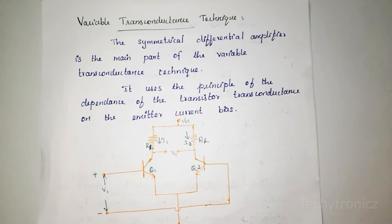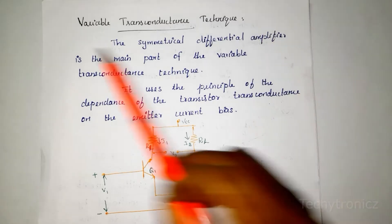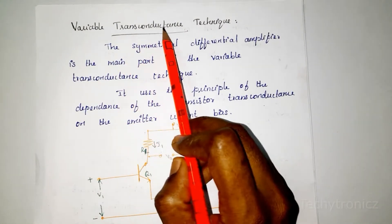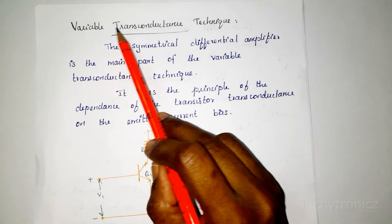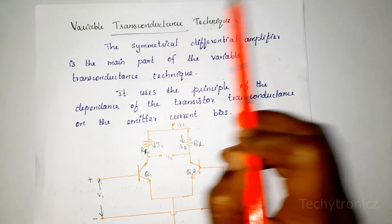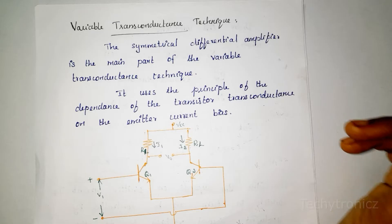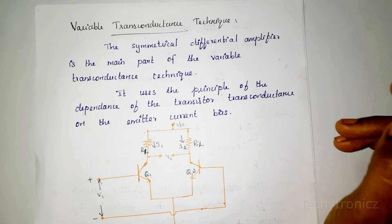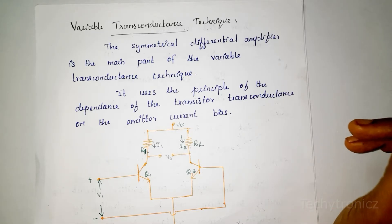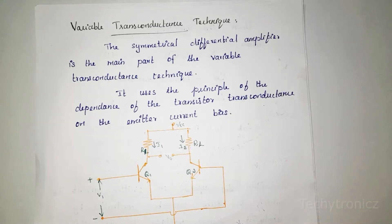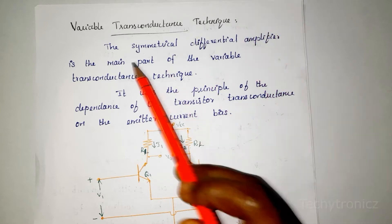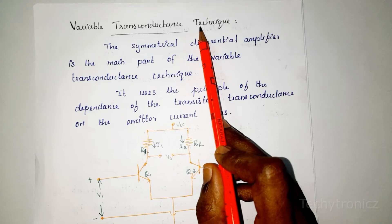In this video we are going to learn about variable transconductance technique. Variable transconductance technique is an analog multiplier. In an analog multiplier, the output voltage is directly proportional to the product of two input voltages — that is an analog multiplier. So this is also an analog multiplier.